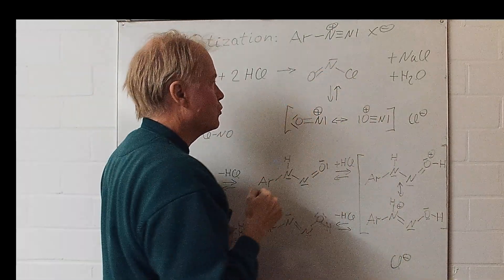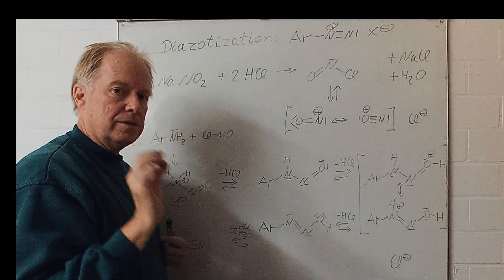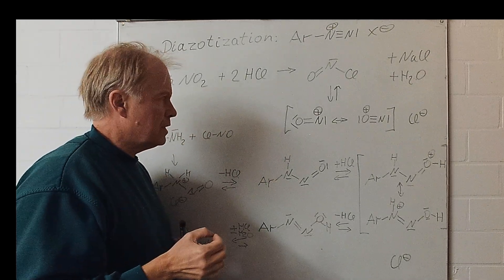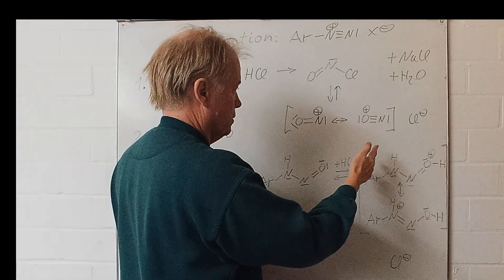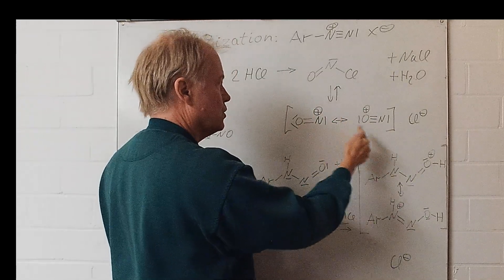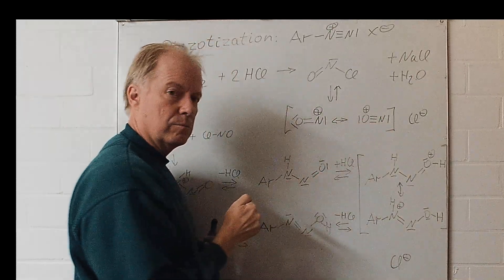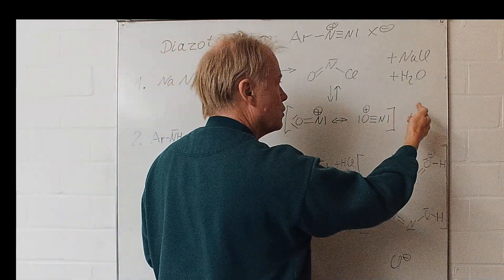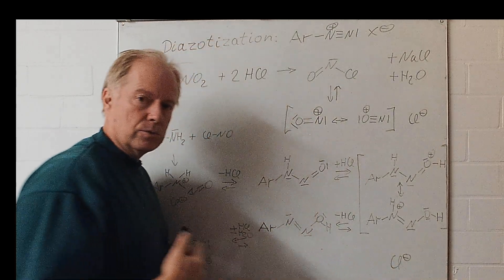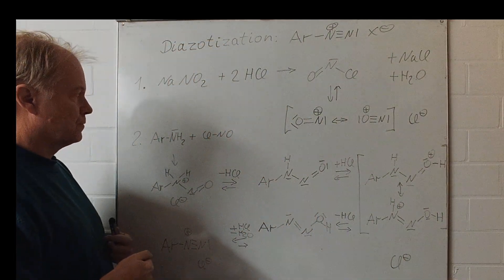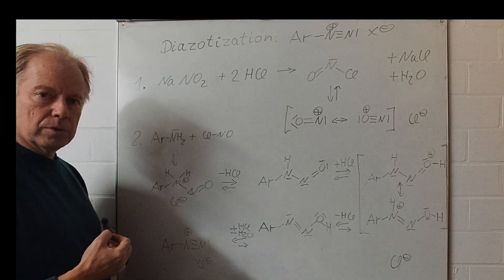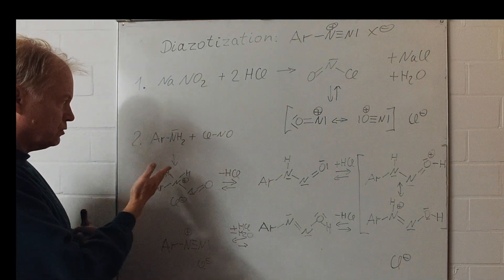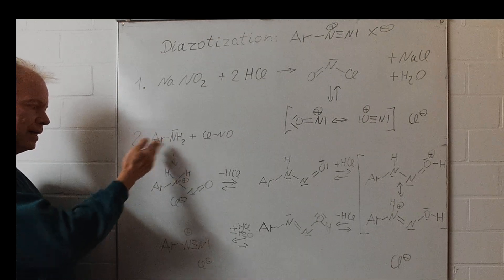This nitrosyl chloride easily dissociates into its ions, the nitrosyl cation, which is mesomerically stabilized, and the chloride counter-anion. So the nitrosyl chloride is capable to react with anilines.